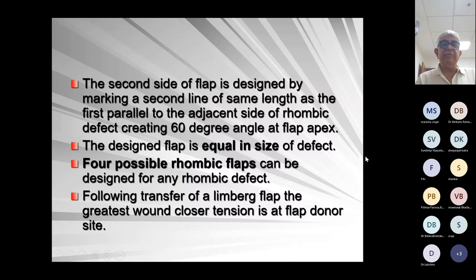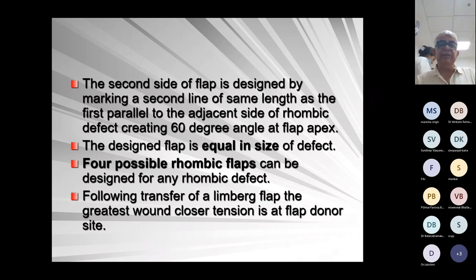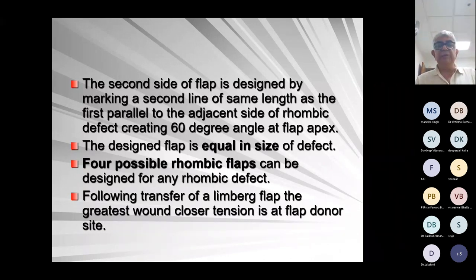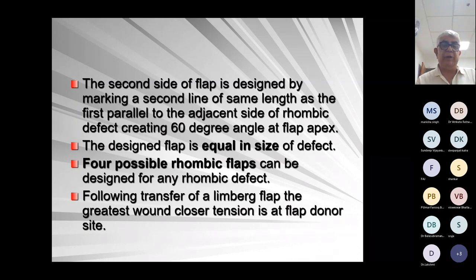The second side of the flap is designed by marking a second line of the same length as the first, parallel to the adjacent side of the rhombic defect, creating a 60-degree angle at the flap-defect junction. The desired flap is equal to the size of the defect. Four possible rhombic flaps can be designed from any rhombic defect. Following transfer of the Limberg flap, the greatest tension is at the flap donor site.